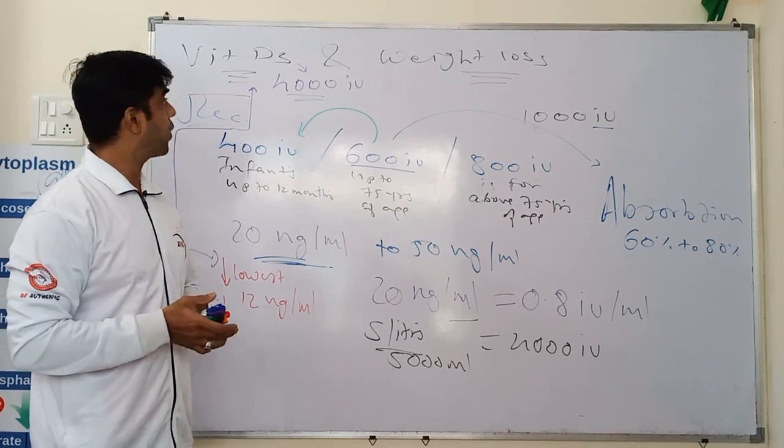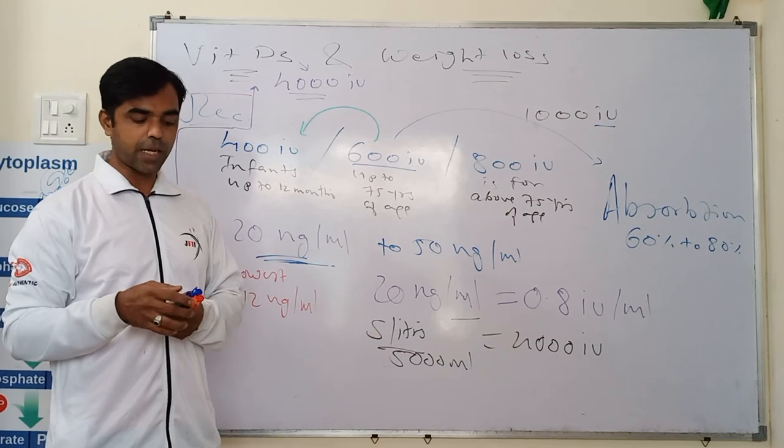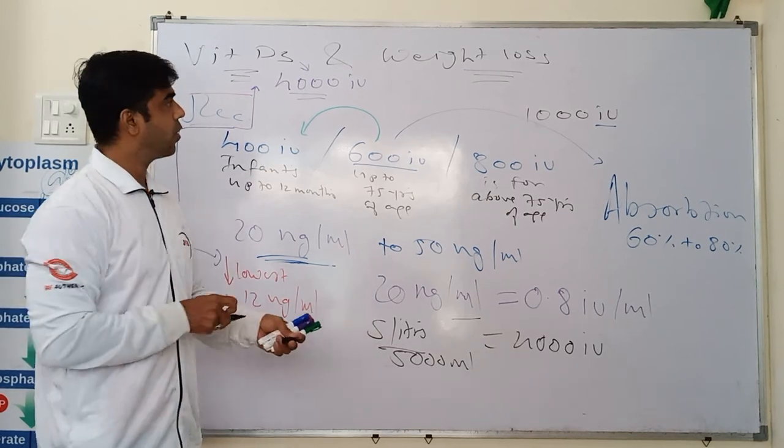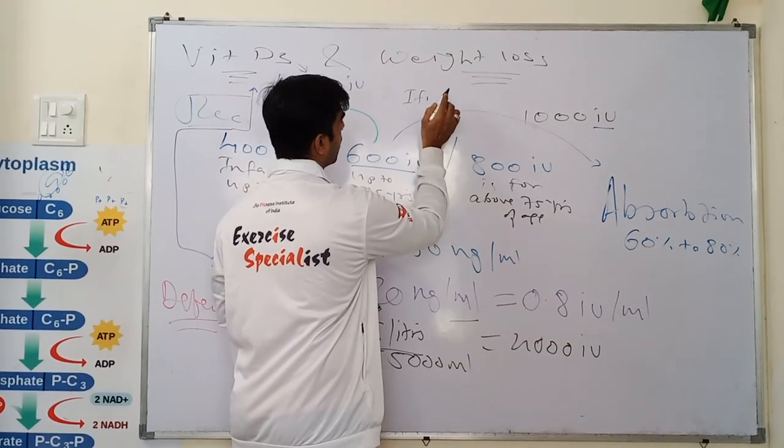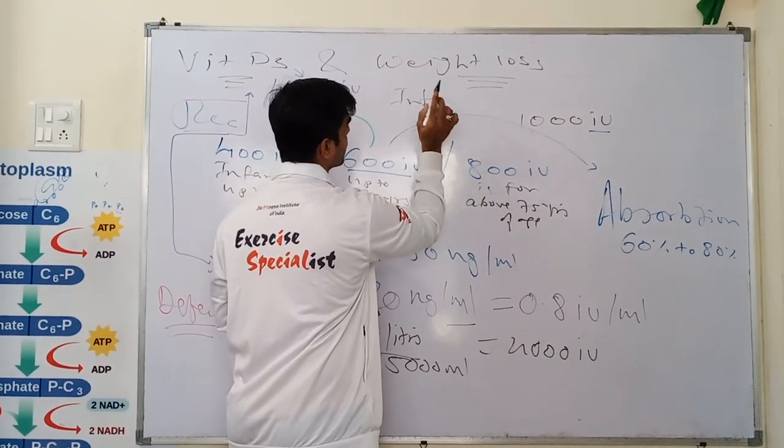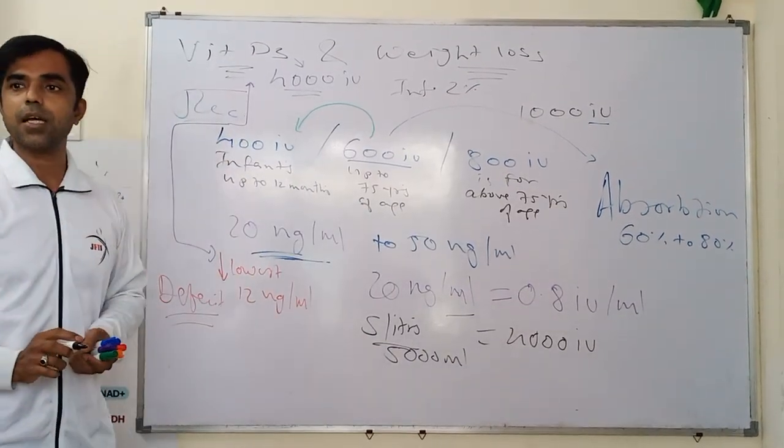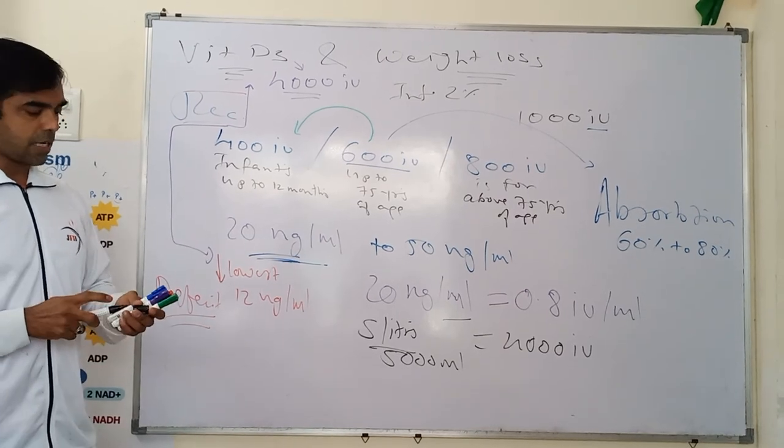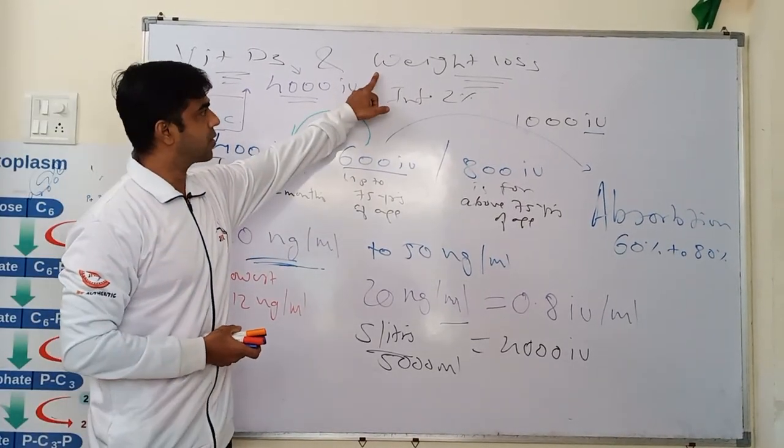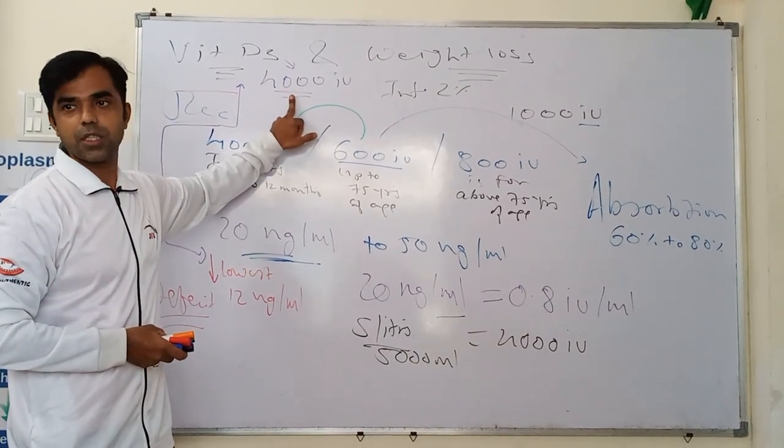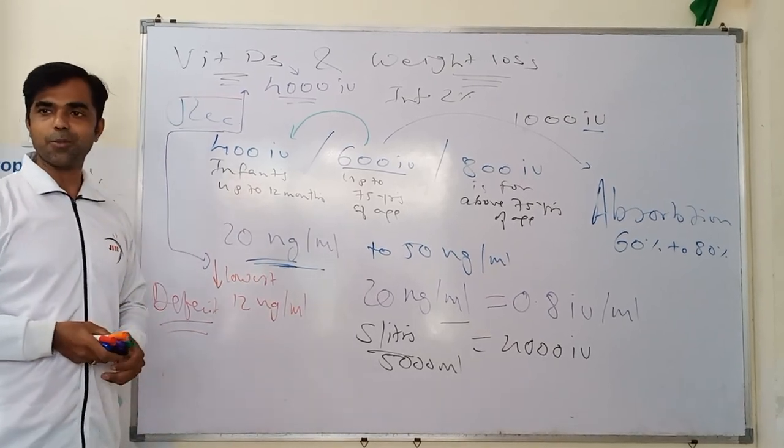As you know now vitamin D is very crucial in this pandemic because if you are having enough amount, the infection chances are just 2%. Now make sure if you are targeting weight loss, you should increase it somewhere like 4000 international unit. I hope I have simplified this. Yes sir, thank you very much.